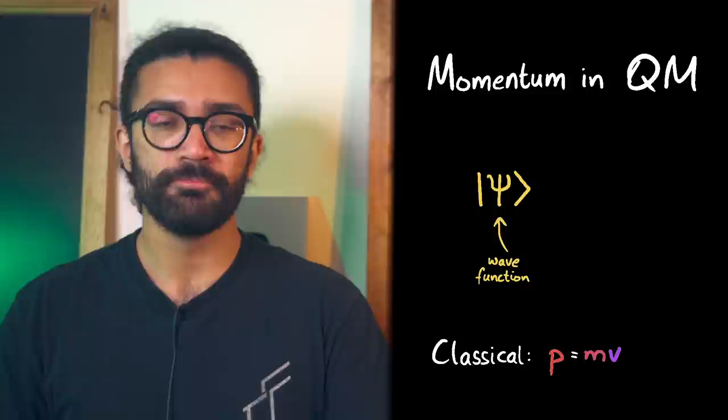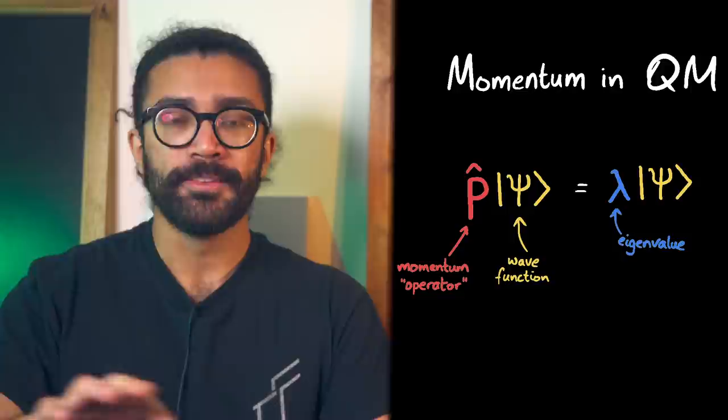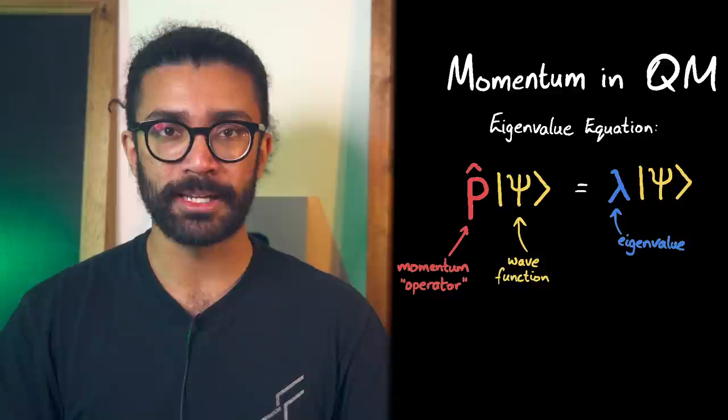Well, in the maths of quantum physics, we say that we apply a measurement operator to our wave function in order to give us what we would measure in an experiment. This equation here is known as an eigenvalue equation, which shows that when we apply a measurement operator to our wave function, the eigenvalue, which is what we get on the right-hand side, or at least one of the things we get on the right-hand side of this equation, is the value that we actually end up measuring when we do the experiment in real life.